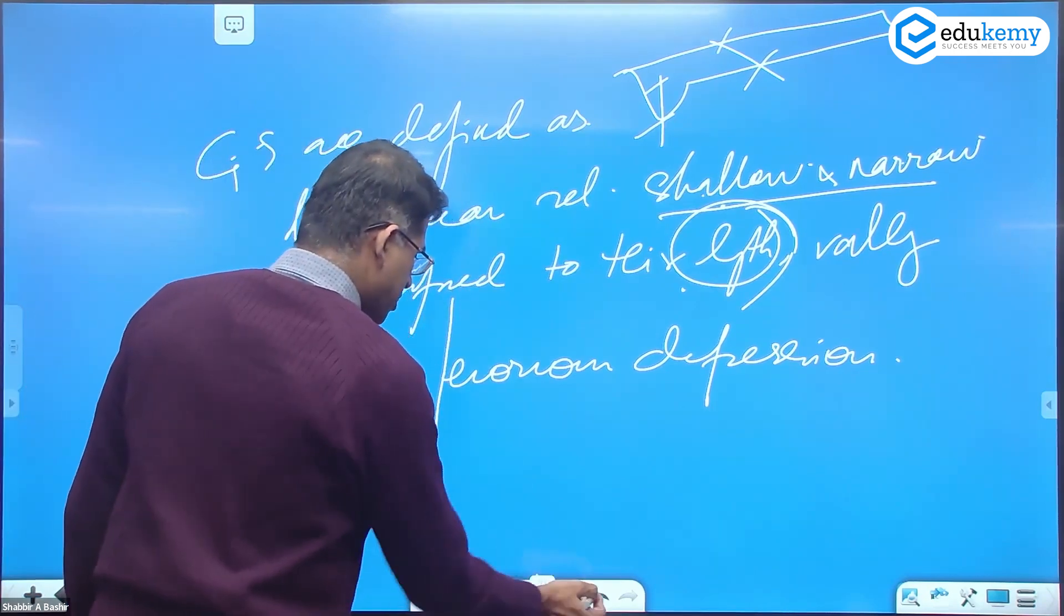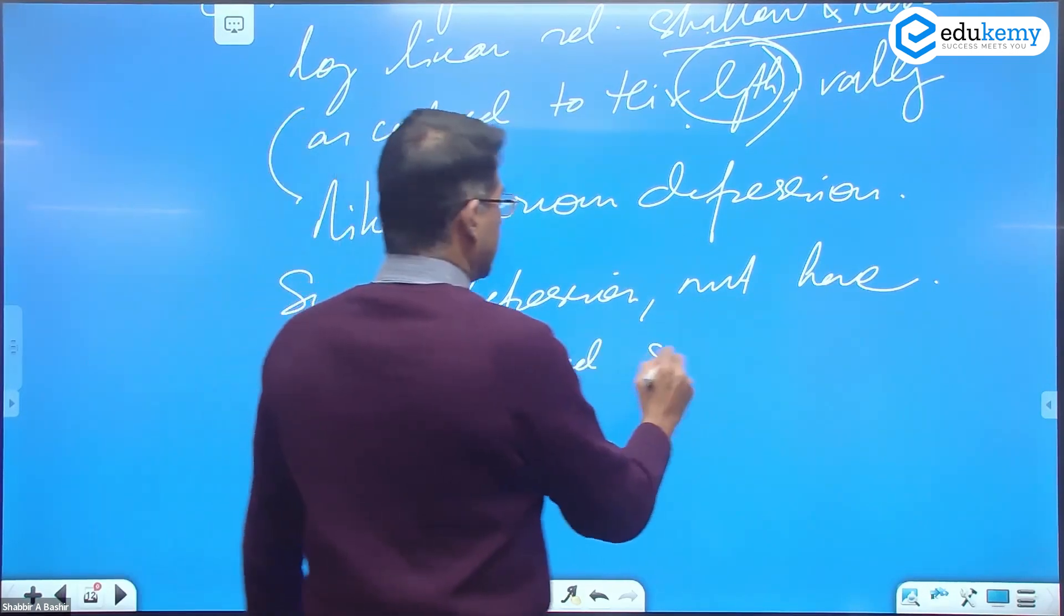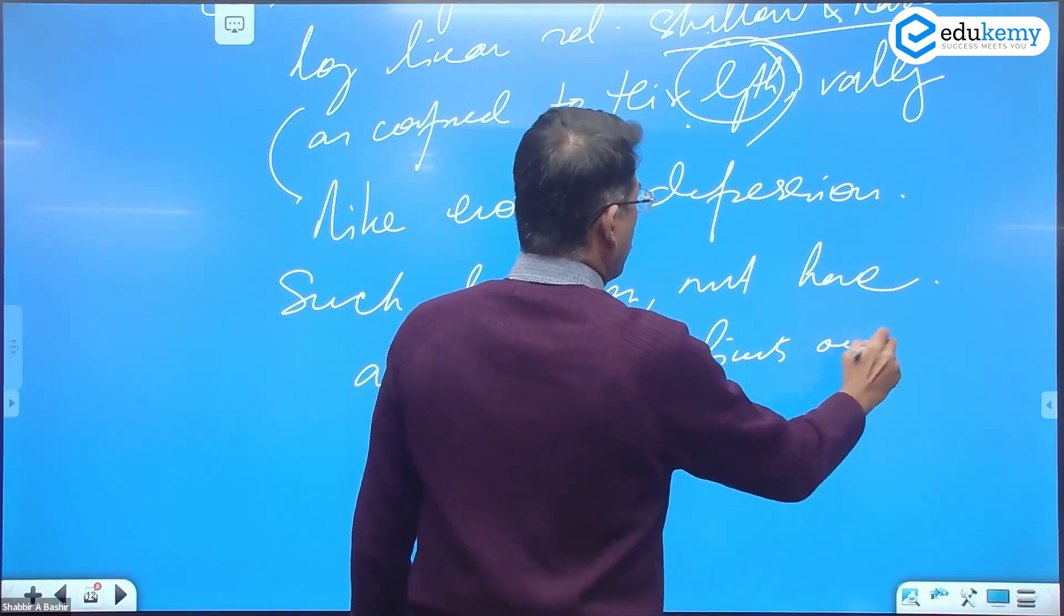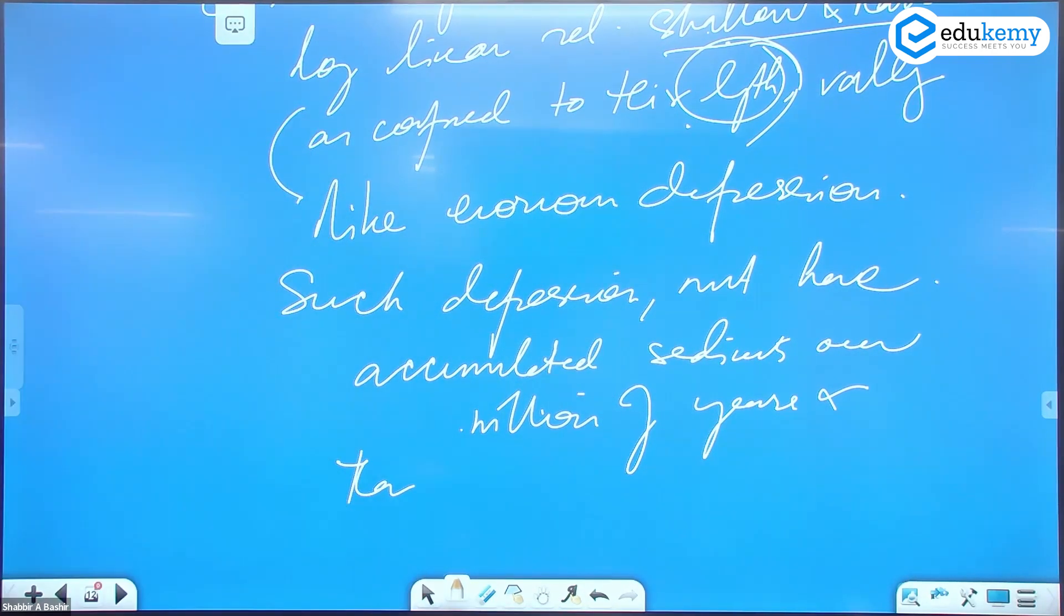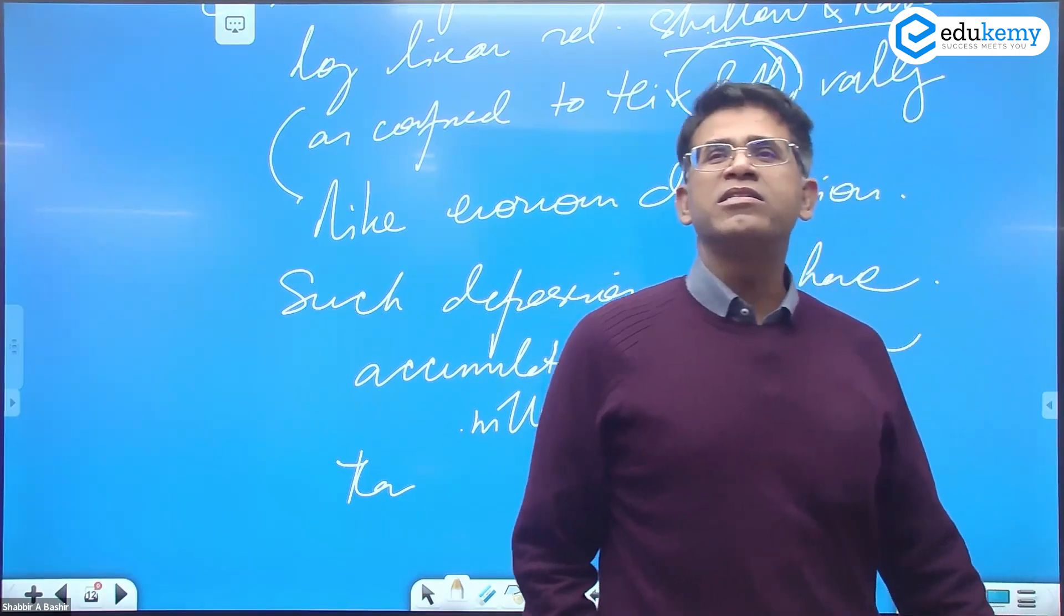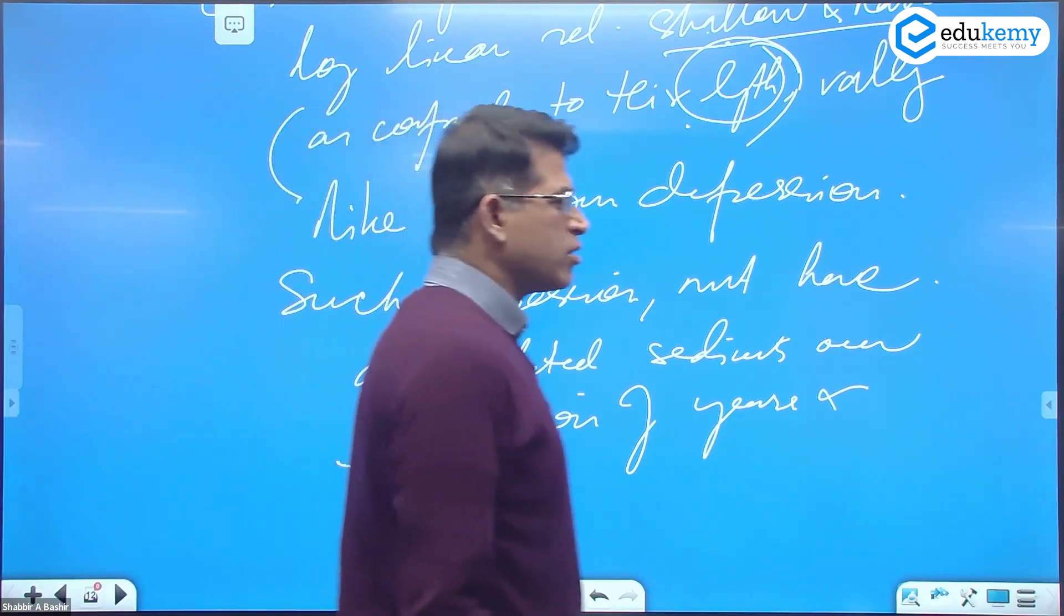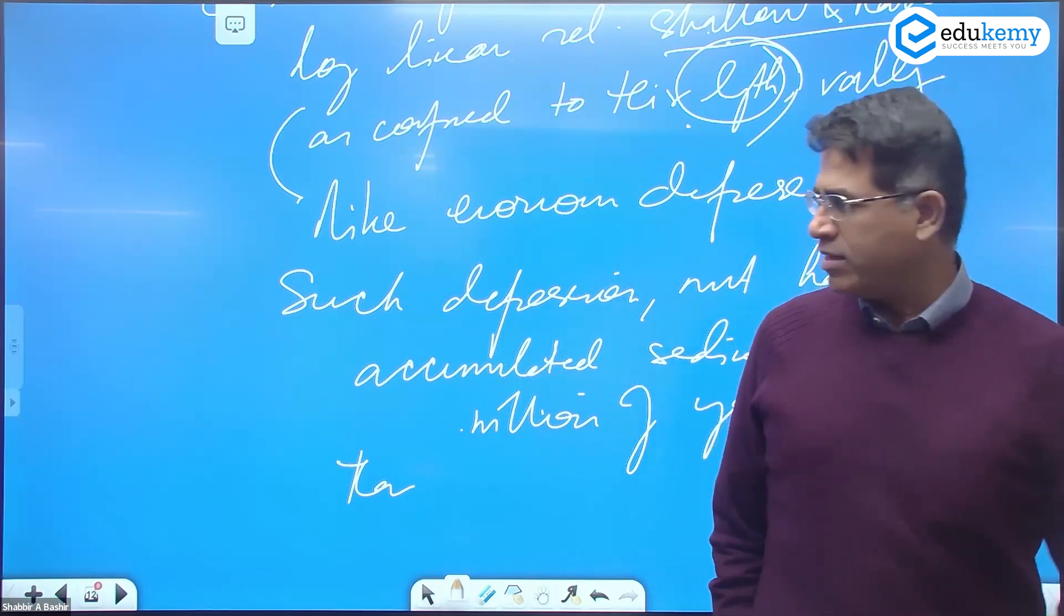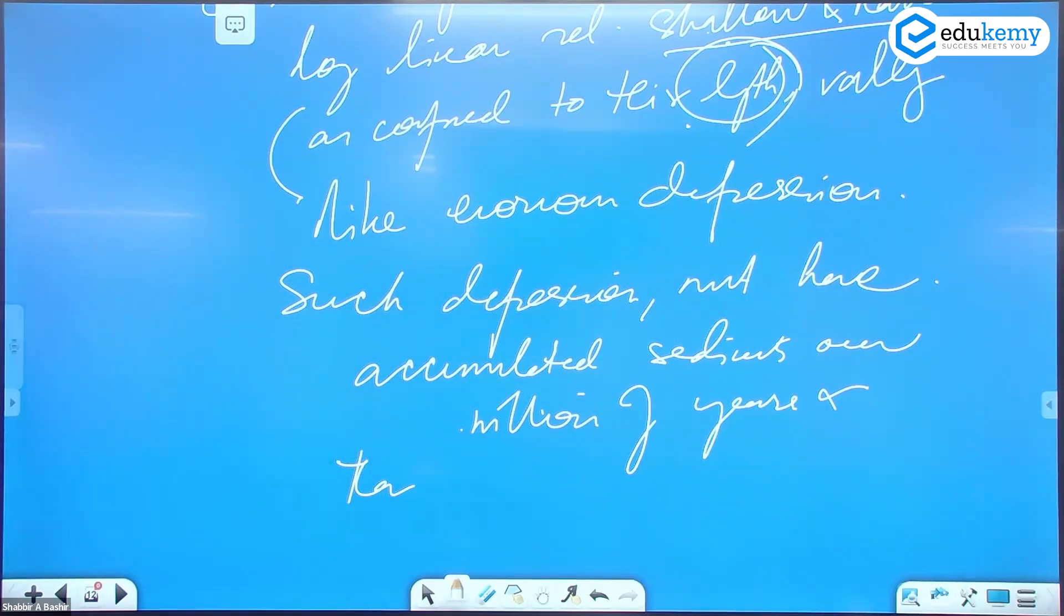Such depressions must have accumulated sediments over millions of years. And then due to compressive forces associated later, and due to compressive forces associated later, such geosynclines squeezed and squashed out the sediments, squeezed and squashed out the sediments that formed the fold mountains across the world.